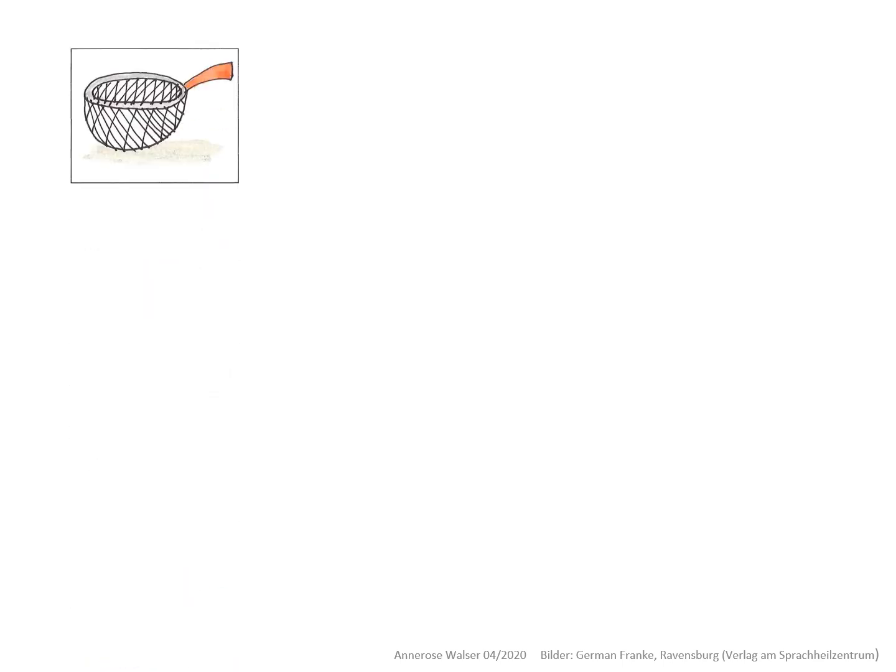Für die Seite 34 im Spracharbeitsheft schaust du bitte noch die folgenden Erklärungen an. Hier geht es nämlich um Wörter, die aus einer Silbe bestehen. Zum Beispiel das Wort SIEB. Hier kannst du den Trick, den du auf der Seite 33 geübt hast, nicht so richtig umsetzen. Du brauchst einen weiteren Trick: du machst jetzt aus dem Wort SIEB die Mehrzahlform.